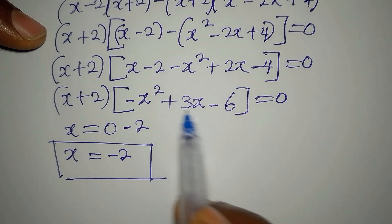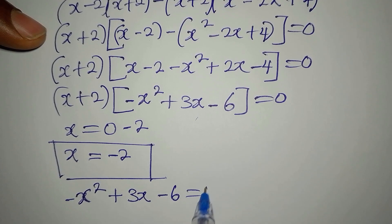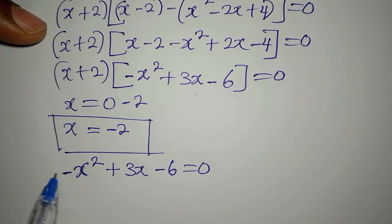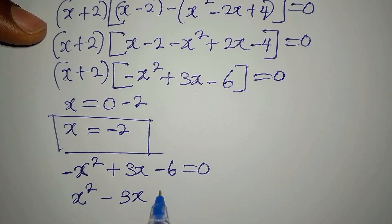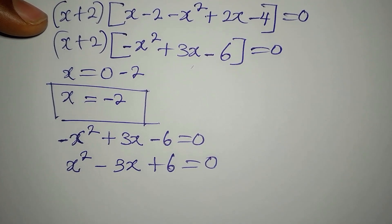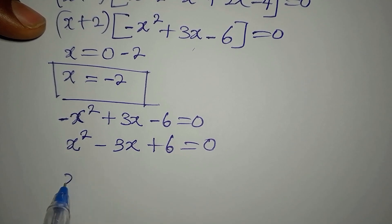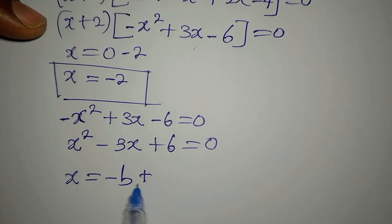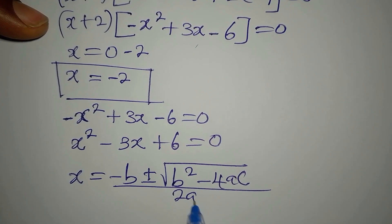To get the other solutions we work with minus x squared plus 3x minus 6 equals 0. Multiplying everything by negative 1, this becomes x squared minus 3x plus 6 equals 0. We now use the quadratic formula: x equals negative b plus or minus the square root of b squared minus 4ac, all over 2a.